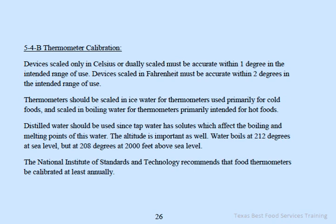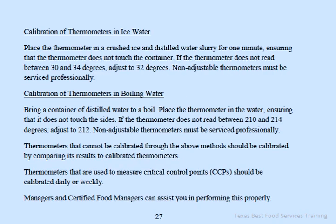Thermometers should be calibrated in ice water for those used primarily for cold foods. Distilled water should be used since tap water affects the boiling and melting points. Altitude matters — water boils at 212 degrees at sea level, but at 2,000 feet it boils at 208 degrees. The National Institute of Standards and Technology recommends food thermometers be calibrated at least annually. To calibrate in ice water: place the thermometer in a crushed ice and distilled water slurry for one minute, ensuring it does not touch the container. If it does not read between 30 and 34 degrees, adjust to 32 degrees. Non-adjustable thermometers must be serviced professionally.